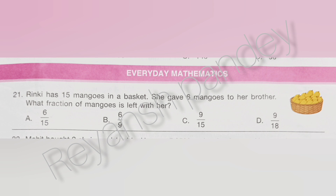Rinky has 15 mangoes in a basket. She gave 6 mangoes to her brother. What fraction of the mangoes is left with her? The answer is A — 6 by 15.